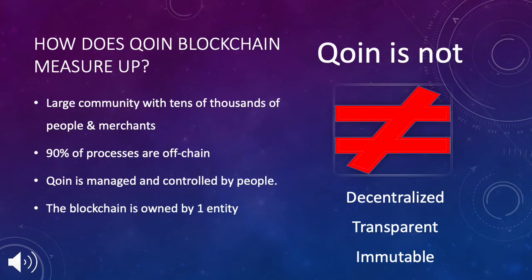How does coin measure up? The coin network has many great features. It has grown into a large community involving tens of thousands of people and many businesses. But unfortunately it does not live up to all that blockchain can be. The coin system utilizes blockchain technology for only a small part of its processes. Most of it is managed and controlled by people, and the blockchain part is centralized and owned by one entity: the coin association.